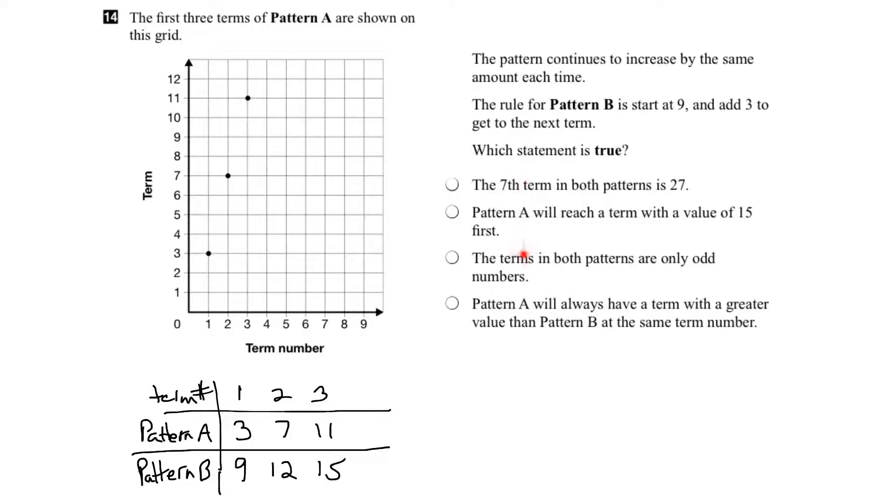Now let's look at some of the statements. We'll start at the bottom. It says that Pattern A will always have a term with a greater value than Pattern B at the same term number. Well, term number 1, Pattern A value is 3, Pattern B value is 9. Right away, that means Pattern B is larger than Pattern A, so this is false. We can eliminate that one.